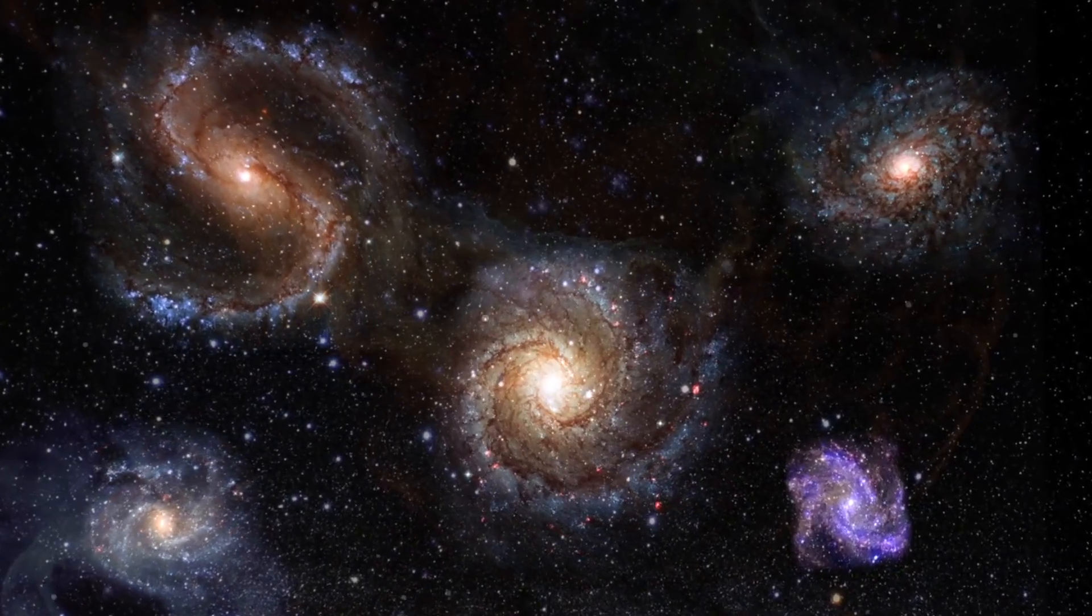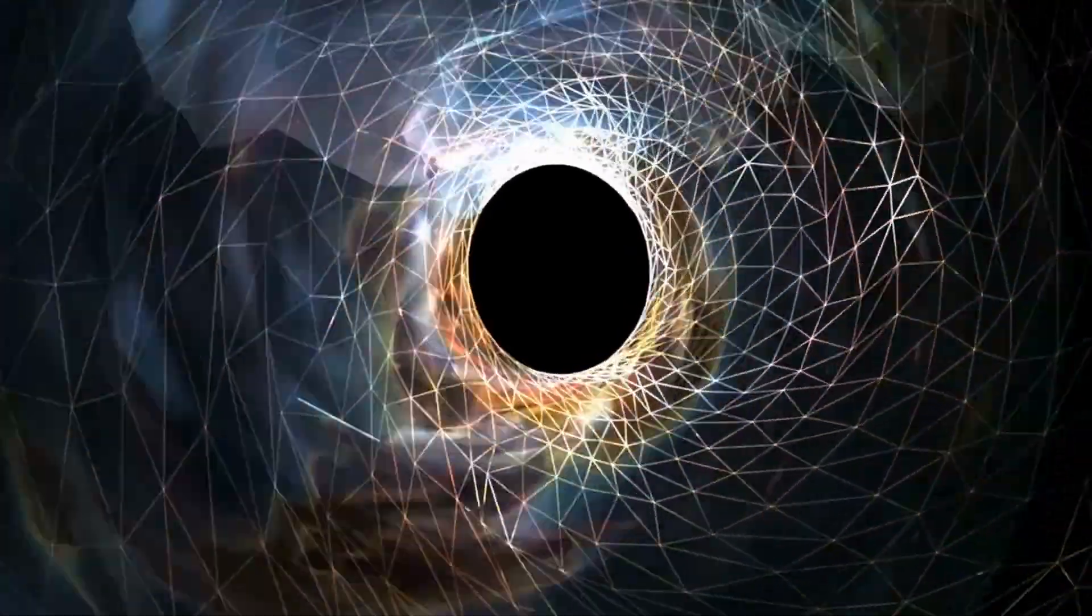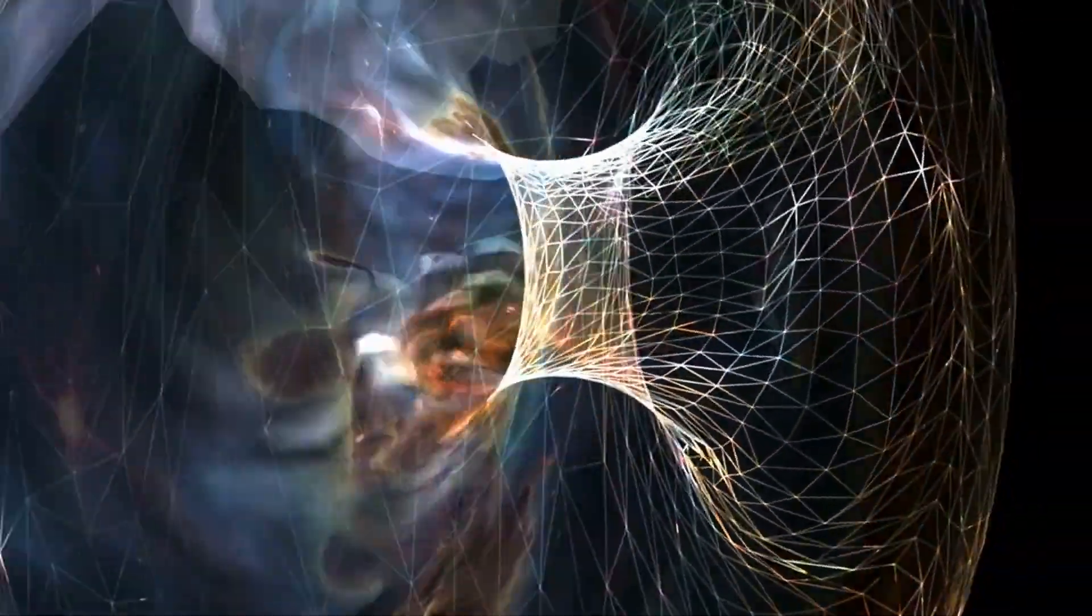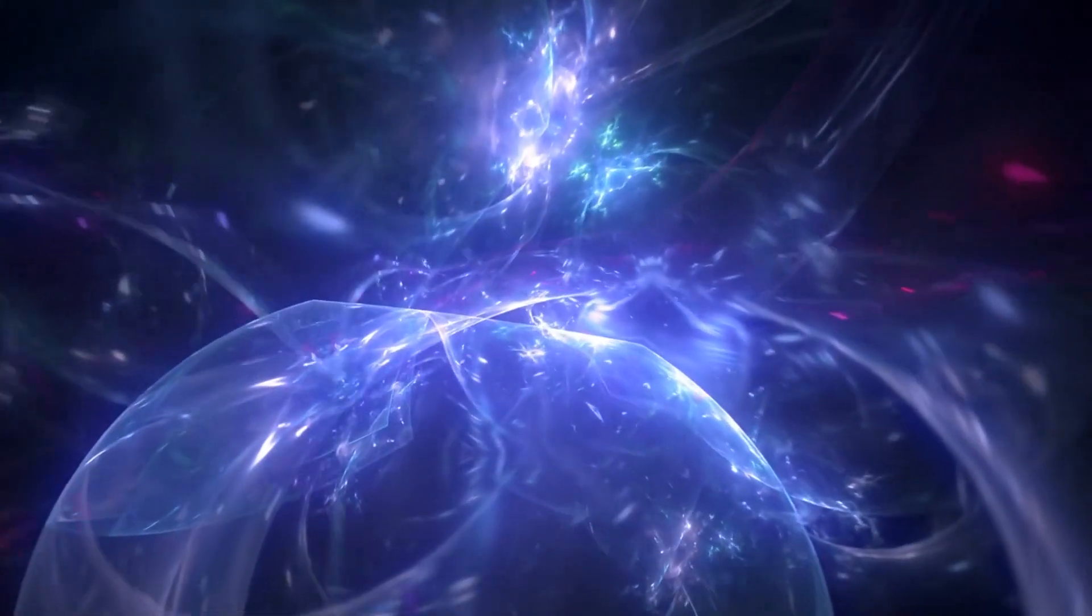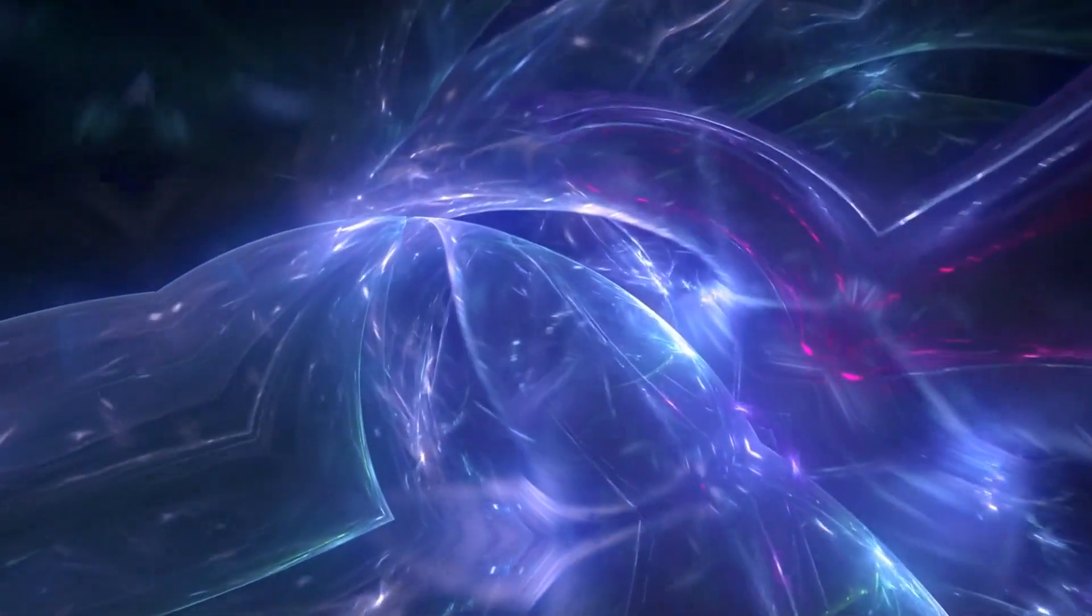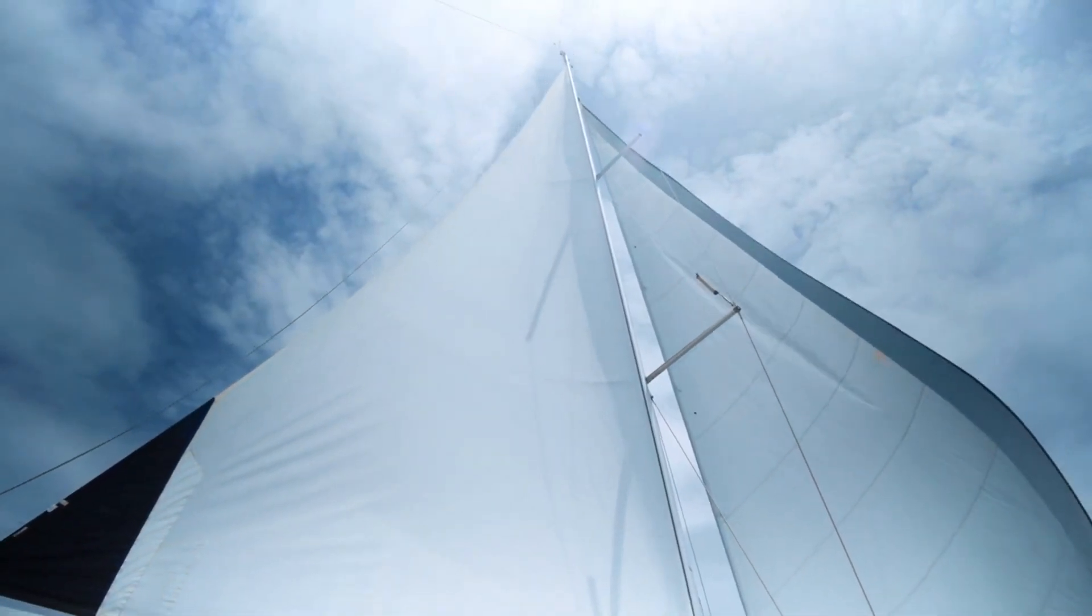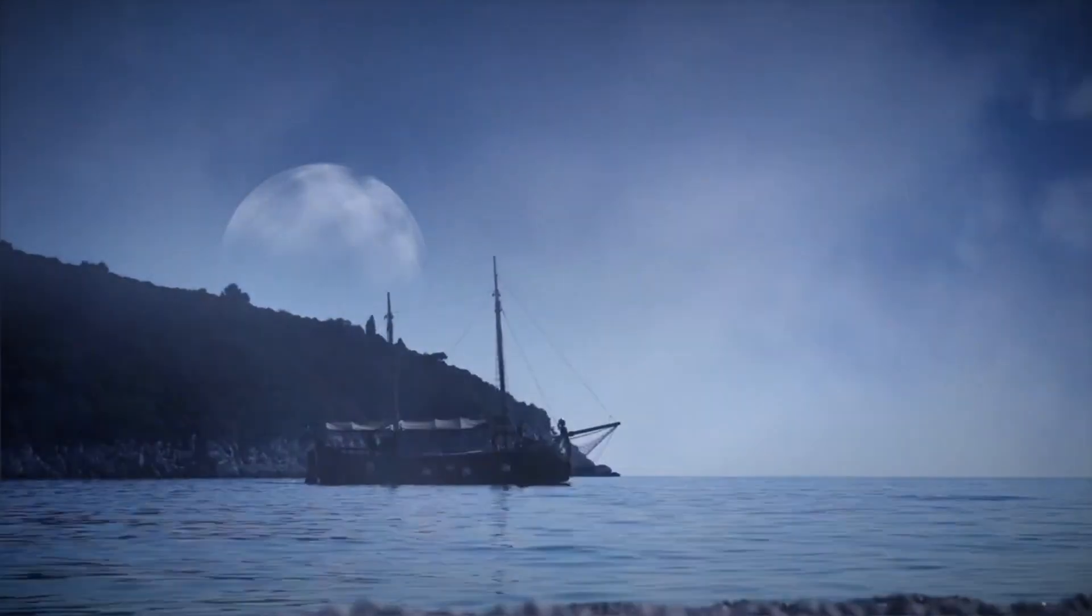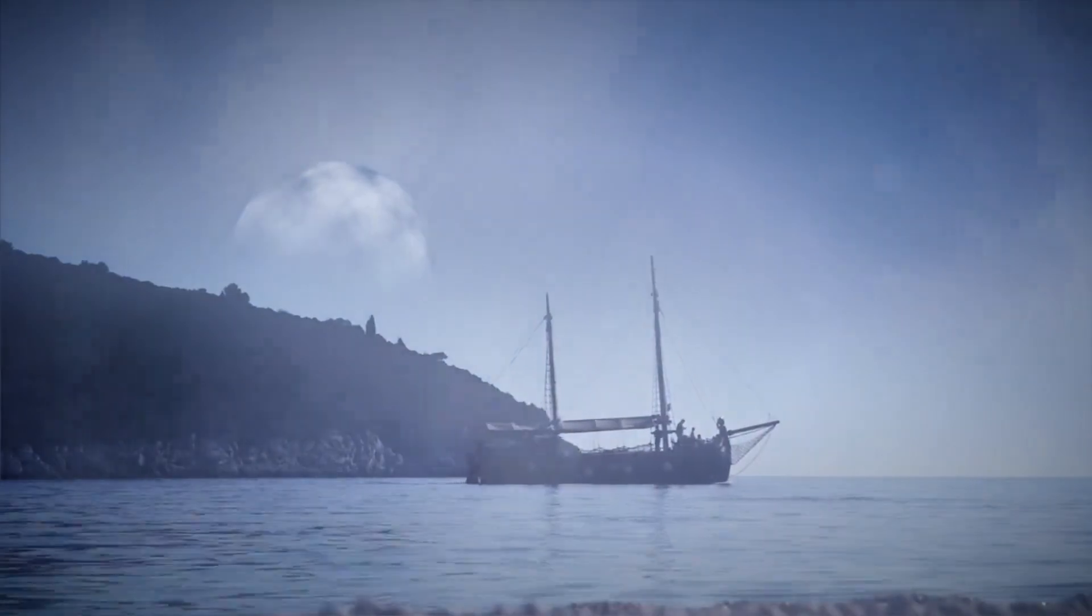But what's causing this cosmic road trip? Why are galaxies moving apart? The culprit is a mysterious force known as dark energy. Now, dark energy is a bit of a mystery. We can't see it. We can't touch it. But we know it's there because we can see its effects. Dark energy is like the unseen wind that fills the sails of a ship, pushing it forward. In the case of the universe, dark energy is pushing galaxies apart, causing the universe to expand.